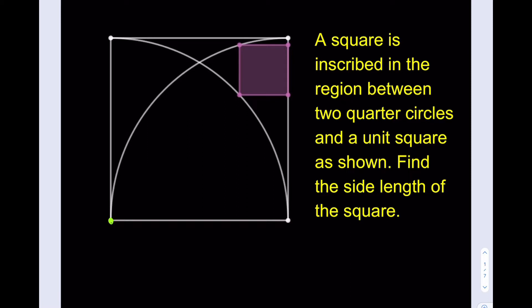As you know, we have a square that's inscribed in the region between the two quarter circles and a unit square as shown. We're going to find the side length for the square. What I'm going to do is make some connections here. Let's start with this one.